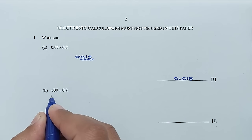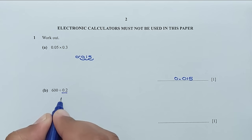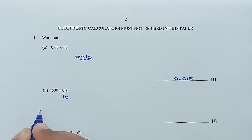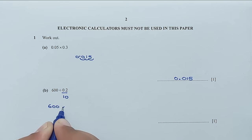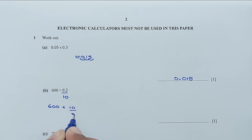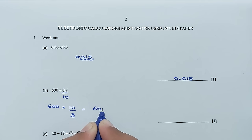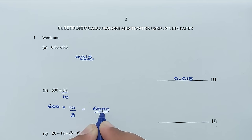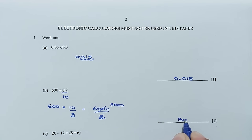Now for part B: 600 divided by 0.2. So 0.2 we can write as 2 out of 10. So this is 600 times 10 over 2, which is 6000 over 2. 2 times 1 is 2, and 2 times 3 would be 6, so 3000 is the answer.